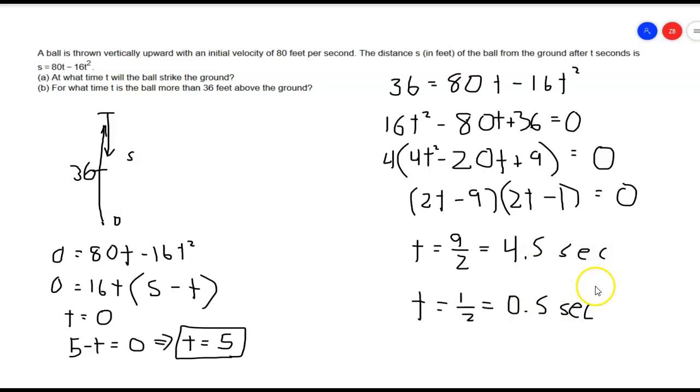Then I set up my inequality. So t, in order for the ball to be above 36 feet, it's got to be less than 4.5 seconds, but it's also got to be greater than 0.5 seconds, or a half a second. This would be my answer: t is between 0.5 seconds and 4.5 seconds. During this interval, it is strictly above 36.